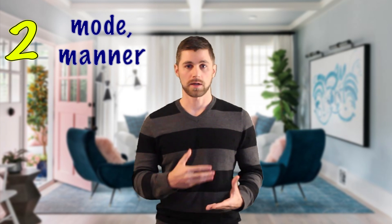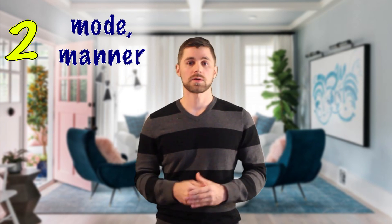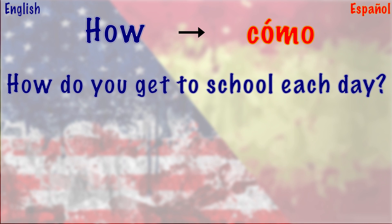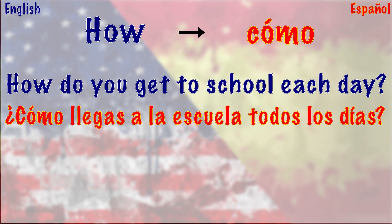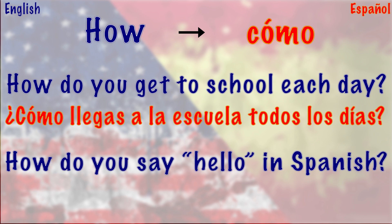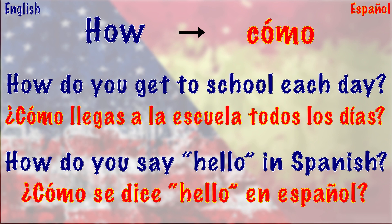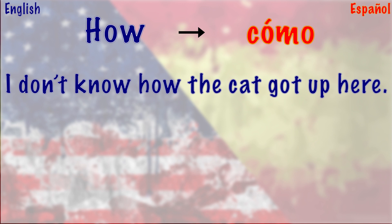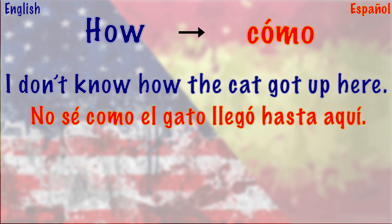The second way we frequently use 'how' in English is to talk about the mode or manner in which something is done. In these cases, we translate 'how' into Spanish using the word 'cómo.' For example, 'How do you get to school each day?' becomes '¿Cómo llegas a la escuela todos los días?' 'How do you say hello in Spanish?' is '¿Cómo se dice hello en español?' And 'I don't know how the cat got up here' becomes 'No sé cómo el gato llegó hasta aquí.'